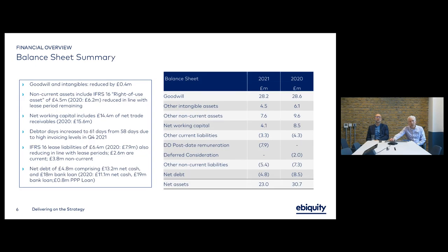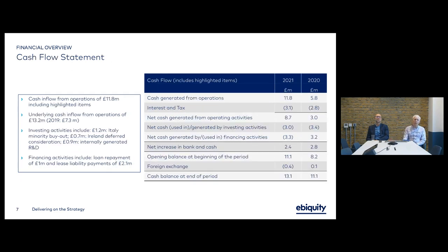Net debt comprises gross cash of £13 million and an £18 million bank loan drawn down at year end. Total cash flow from operations was £11.8 million, of which £13.2 million is what we call underlying, excluding exceptional items. We spent £1.2 million finishing the Italy minority buyout, with slightly lower internally generated R&D at £900,000. The net effect was an increase in bank and cash of £2 million, getting us to the £13 million balance at year end.